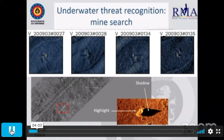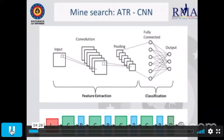If we are positioned at different angles and different ranges, the highlight and shadow can be totally different for the same object. So more and more, the mine countermeasure community is moving away from human operators toward automatic target recognition algorithms. Here we are going to talk about convolutional neural networks.